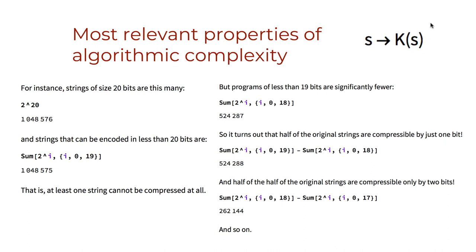This uncomputability of the function s to K(s) is, however, also the source of its greatest strength. Contrary to the common belief that the greatest burden or drawback of K is its uncomputability, it is its uncomputability that provides K with its greatest power. Algorithmic information theory proves that no computable measure will be up to the task in finding all possible regularities among all possible infinite sequences, or even finite sequences.